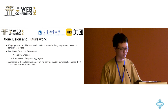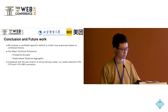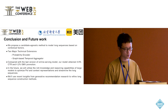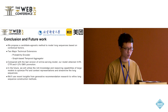In conclusion, we propose a candidate-agnostic method to model long sequences based on contexts. To the best of our knowledge, this is the first attempt to apply contexts in modeling long sequences in this domain. We propose two major techniques: a probability encoder and a graph-based temporal aggregator. Compared with the last version of our online server model, our model obtained 4.6% CTR and 4.2% GMV promotion. In the future, we will utilize the knowledge and reasoning capability of large language models to optimize context representations and streamline long sequences, and also use insights from generative recommendation research to refine long sequence construction methods.